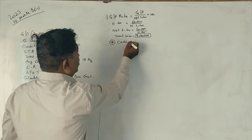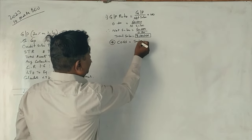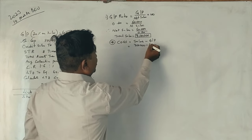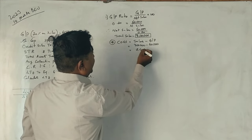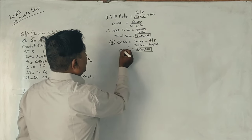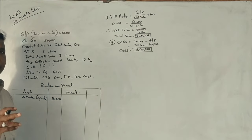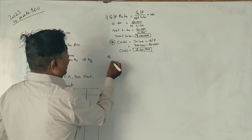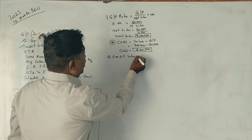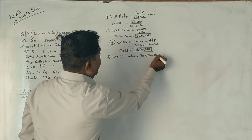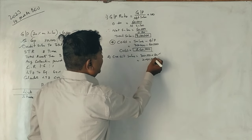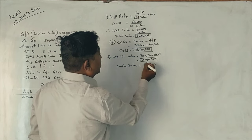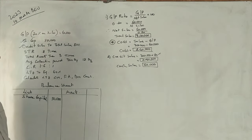Cost of goods sold is sales minus gross profit, so cost of goods sold equals Rs. 3,00,000 minus Rs. 60,000, which is Rs. 2,40,000. Credit sales are 80% of total sales, so credit sales equal 80% of Rs. 3,00,000, which is Rs. 2,40,000. Cash sales are the remaining 20%, which equals Rs. 60,000.